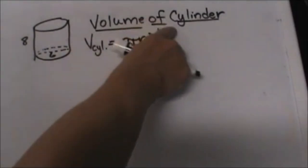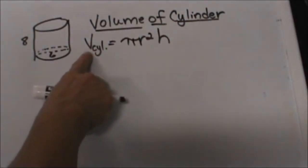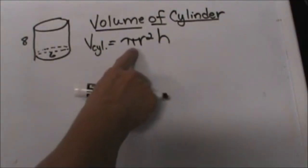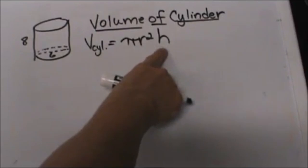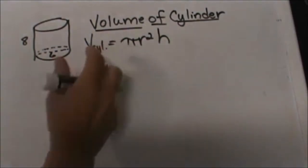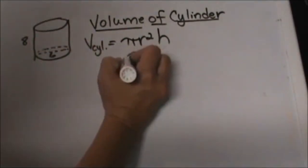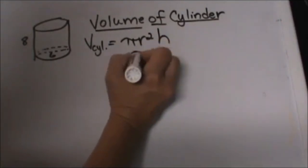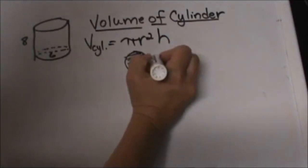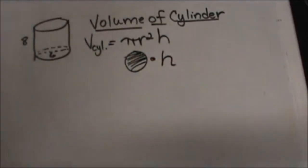Today we're going to look at finding the volume of a cylinder, which is equal to pi r squared times h, where pi r squared is the area of the base because the base is a circle, times the height of the object.